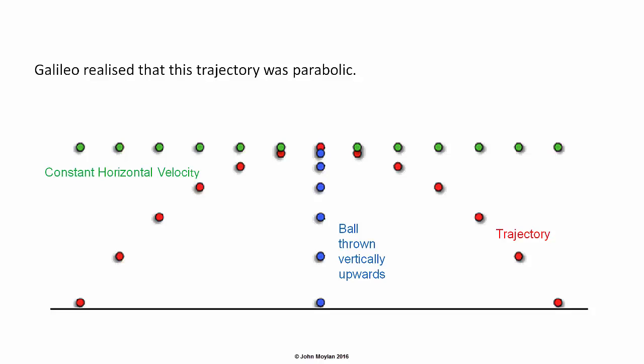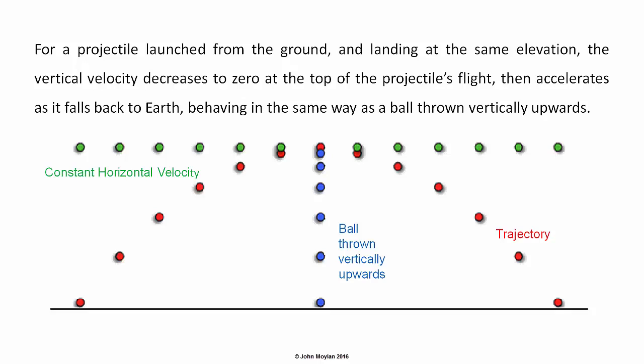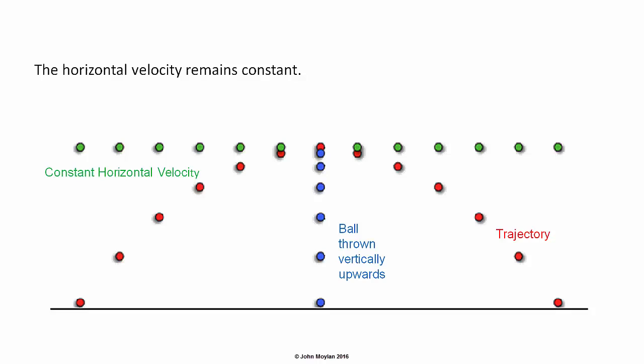The two components — the constant horizontal velocity and the constant vertical acceleration — combine to make up a parabolic trajectory for the projectile. This was the revolutionary thing that Galileo realized. For a projectile launched from the ground and landing at the same elevation, the vertical velocity decreases to zero at the top of the flight and then accelerates as it falls back to earth, behaving the same way as a ball thrown vertically upwards. In the horizontal direction, the motion matches a ball rolling along a frictionless plane with the same horizontal velocity.